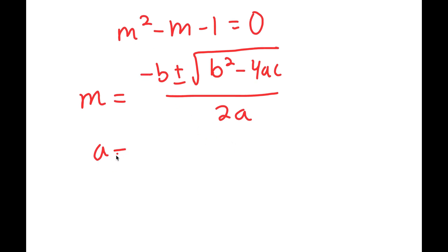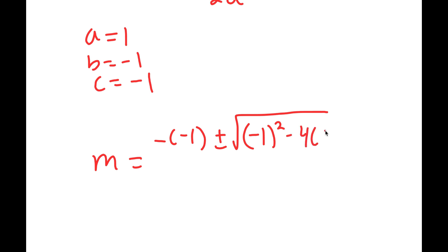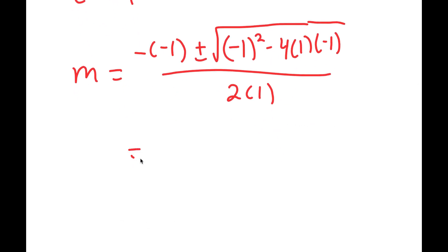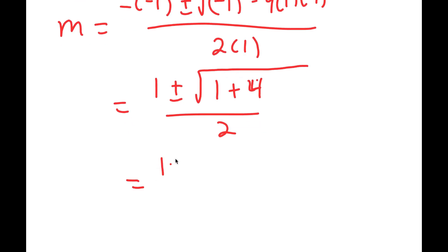So in this case, a is 1, b is negative 1, and c is negative 1. So I get m is equal to negative of negative 1 plus or minus the square root of negative 1 squared minus 4, a is 1, times c which is negative 1, all over 2a, so 2 times 1. And this turns into positive 1 plus or minus the square root of 1 plus 4 over 2, which is equal to 1 plus or minus the square root of 5 over 2.